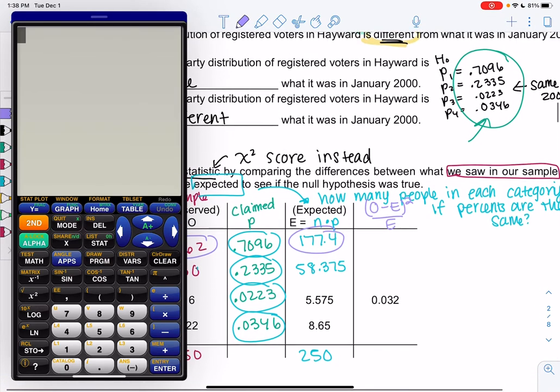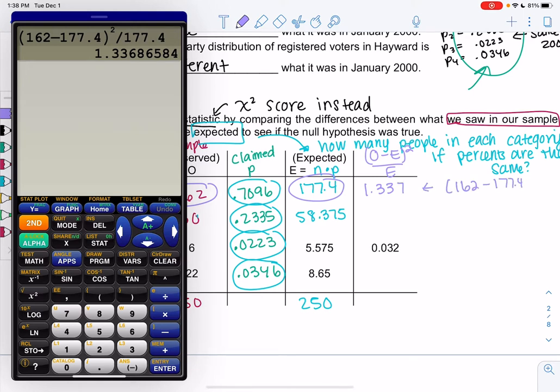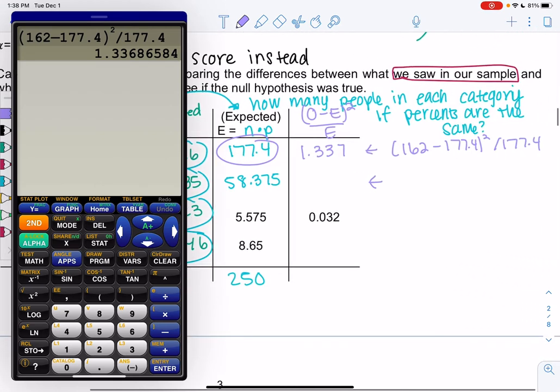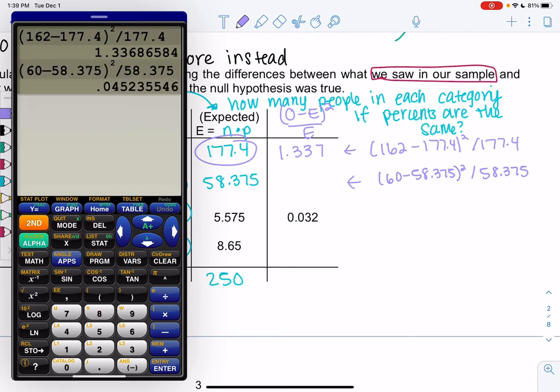We're going to do 162 in parentheses minus 177.4, square it, and divide by 177.4. These are going to be like mini Z-scores. I got 1.337. The next one will be 60 in the sample minus 58.375, square it and divide by 58.375. We're basically finding like a little mini Z-score for each row, it's just a different formula. I got 0.045.